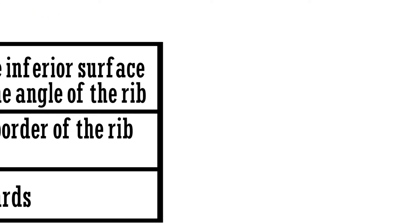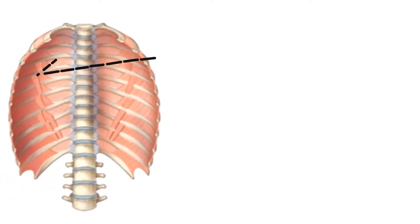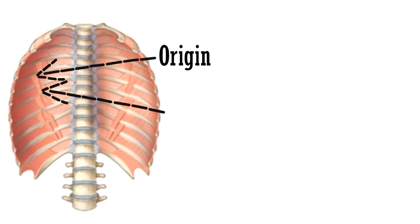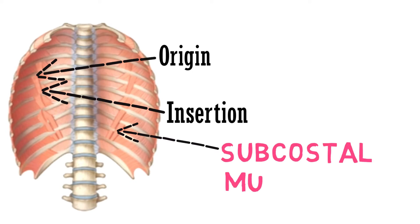Let's have a look. As you can see, this is the point of origin — the inferior surface of the lower ribs. And this is the point of insertion — the superior borders of 2 or 3 ribs below. These muscles are the subcostal muscles.